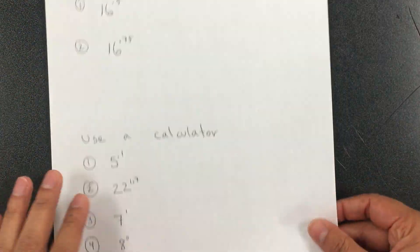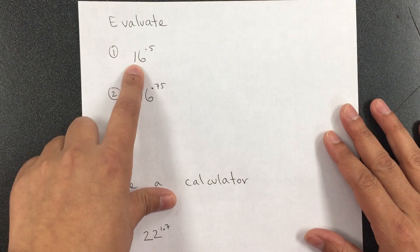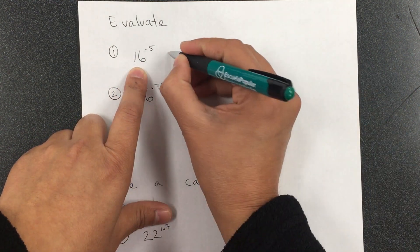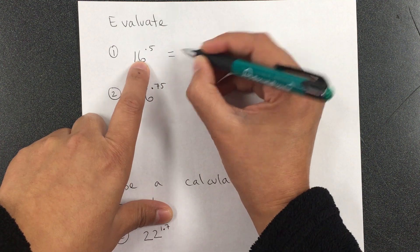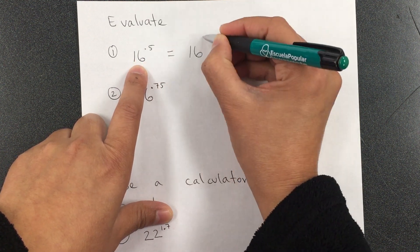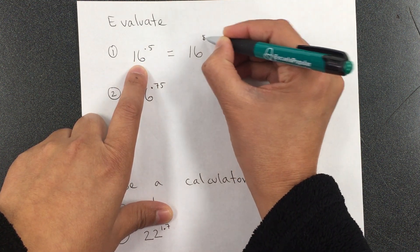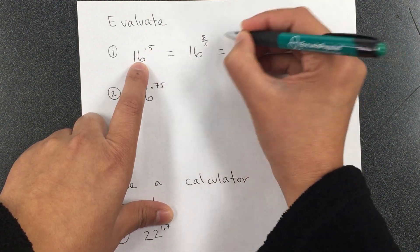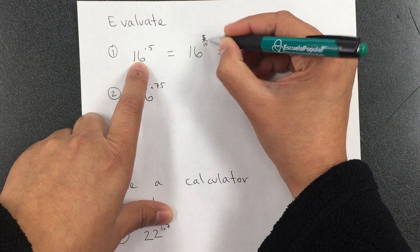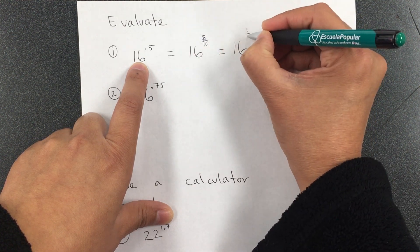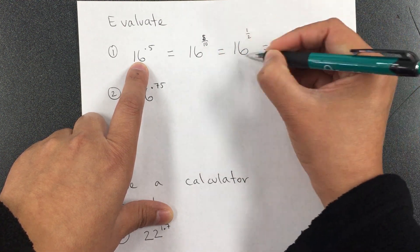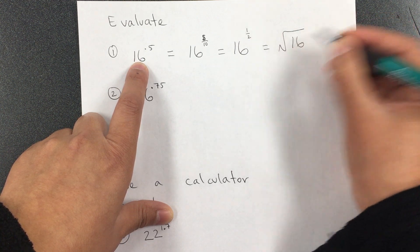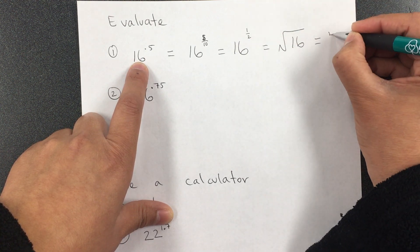Now evaluate. For 16 to the 0.5: recall that 0.5 is the same as 5/10, which simplifies to one-half. 16 to the one-half is the same as the square root of 16, which is 4.